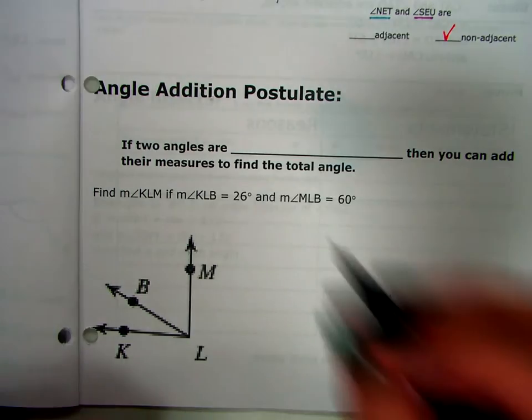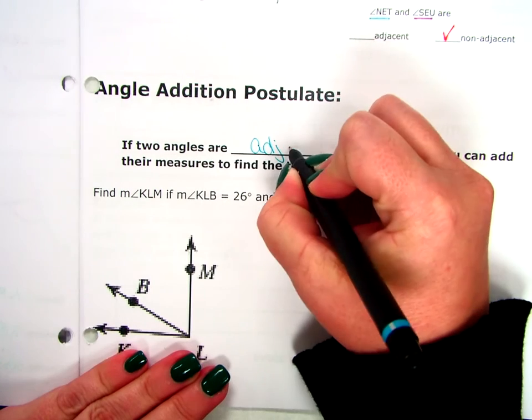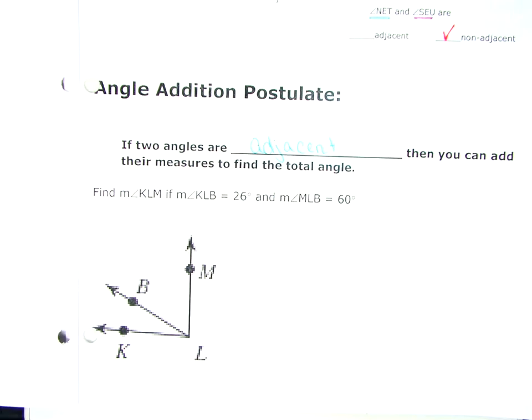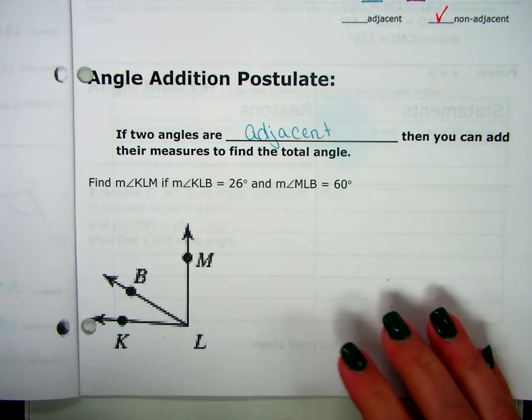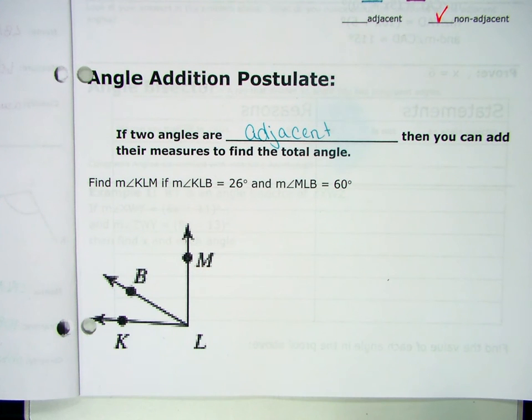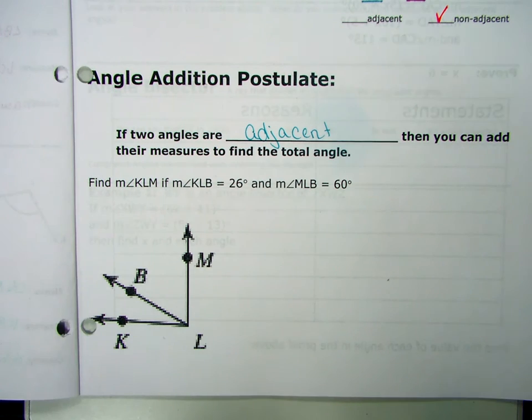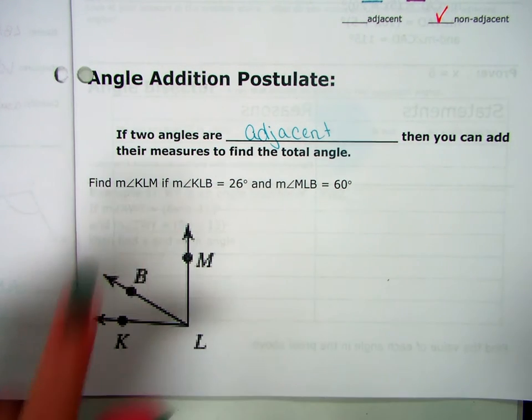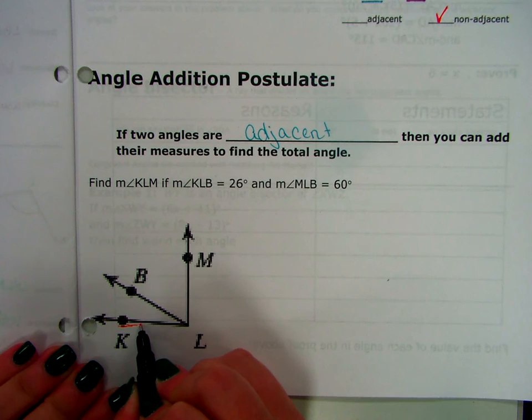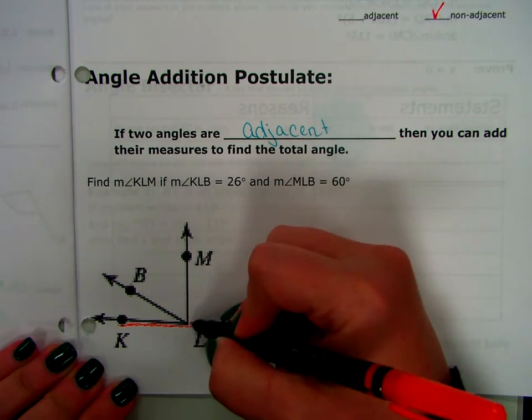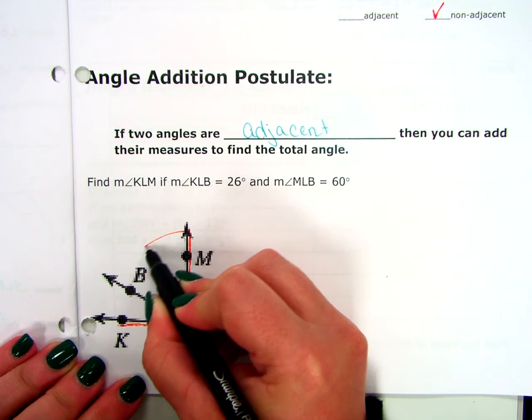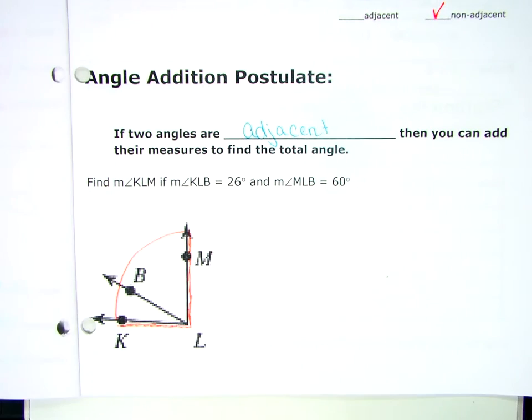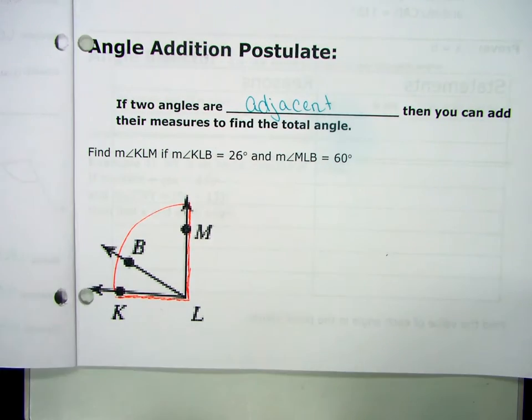The angle addition postulate does the same exact thing but instead of we're working with segments, we're working with angles. But they have to be angles that are adjacent. So, for example, find the measure of angle KLM if angle KLB equals 26 degrees and the measure of angle MLB equals 60 degrees. So, let's see what we're trying to find. We're trying to find angle KLM. So, K to L to M. That's a whole angle.